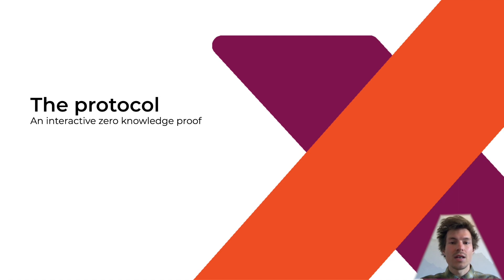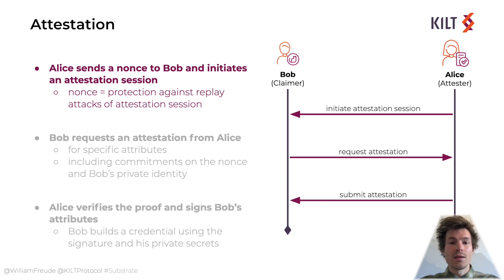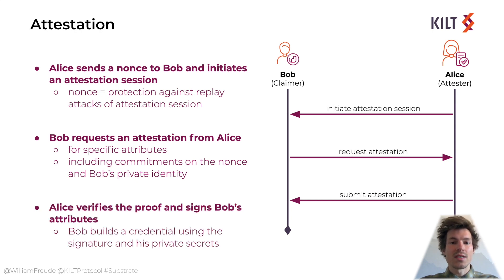Now we know what anonymous credentials are and can proceed to how a protocol could look like when using them. In our case, it is an interactive one. We start with the attestation. Bob wants to claim his possession of a credential to an attester Alice. Before Bob's claim can be attested, Alice has to initiate the attestation session by generating and sending a nonce to Bob that prevents replay attacks. Then he commits on the nonce with his private identity and sends his claim to Alice. Alice can validate the claim and if everything checks out, she signs and returns it back to Bob together with a witness. A witness is basically a large number needed for revocation. Now Bob can generate his credential using the signed claim.